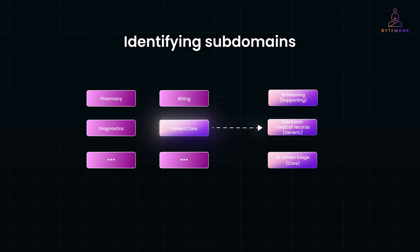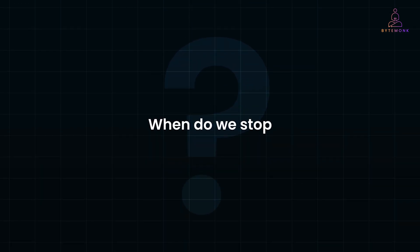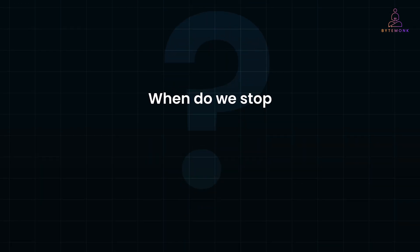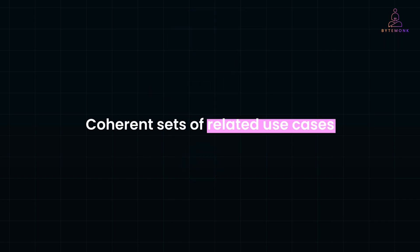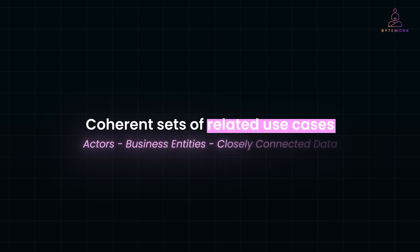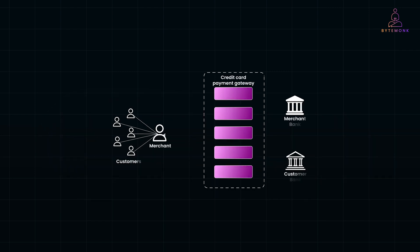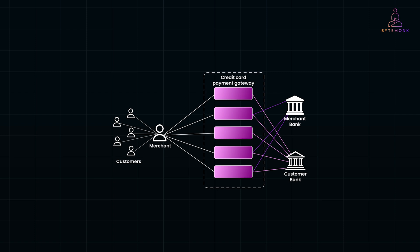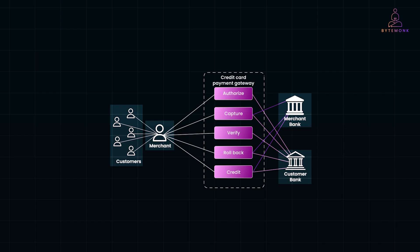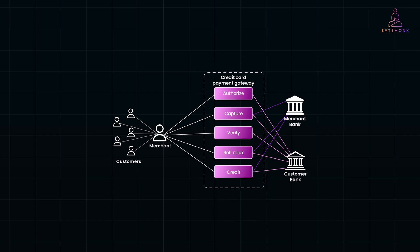We can't keep drilling endlessly into details when identifying subdomains, so when do we stop? A good rule of thumb is to treat subdomains as a coherent set of related use cases sharing the same actors, business entities, and closely connected data. For example, the credit card payment gateway consists of tightly connected use cases such as authorize, capture, verify, rollback, and credit — involving the same key actors: merchants, customers, and their respective banks, operating on shared data like payment details and account balances. Breaking it down further might disrupt its coherence, making this the ideal point to stop subdividing.